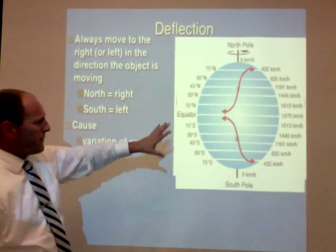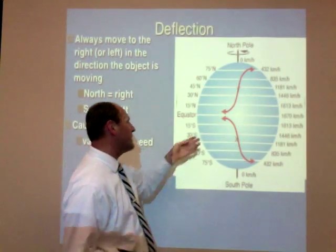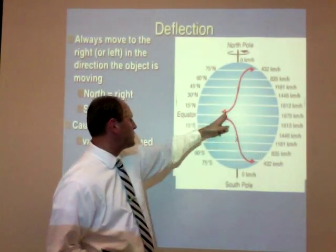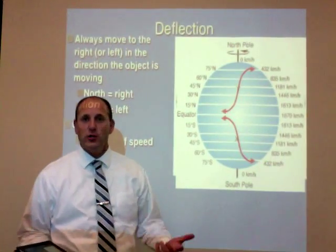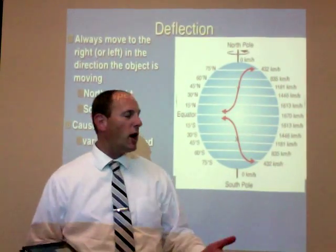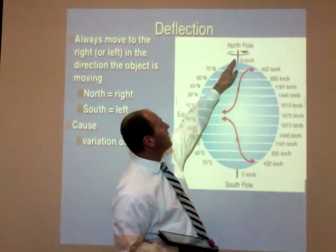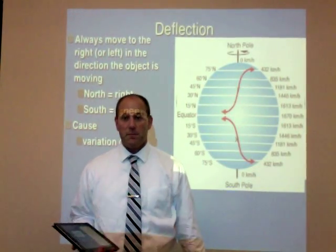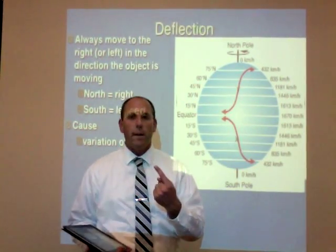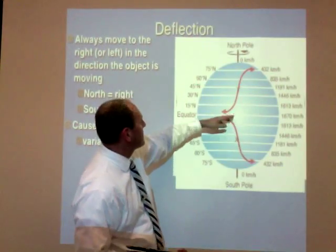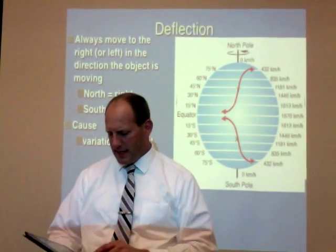We've actually done tests to see what the speed of the earth is in different locations. At the equator it's going over 1,600 kilometers an hour — that's pretty fast — versus the north pole where it's going basically zero. It's just spinning around in place. So we have this very distinctive speed difference.